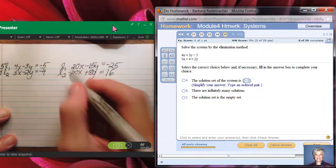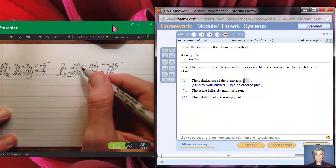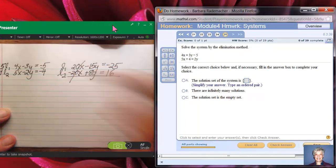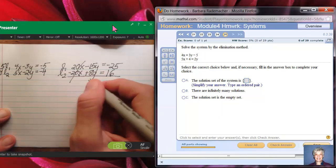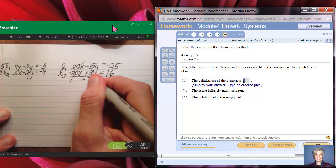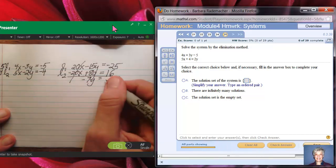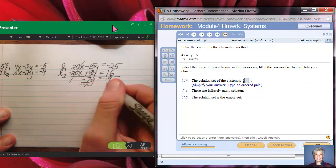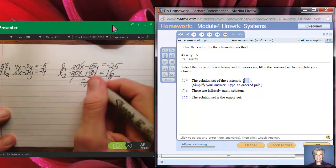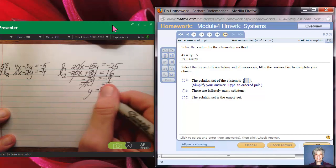If I were to add the x terms together, and the y terms together, and the number terms together, look what would happen. 20x minus 20x is zero. They zero out. And I'm left with negative 15y plus 8y. I believe that's going to be negative 7y. 20x minus 20x is zero. And negative 25 plus 16 is going to be negative 9. If I divide both sides by negative 7 so I can get the y by itself, I discover that y equals positive 9/7.